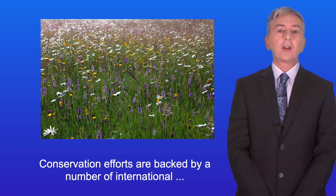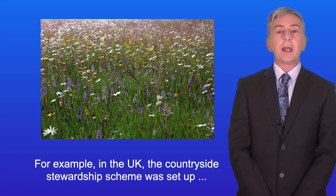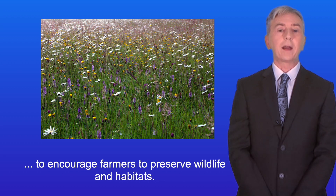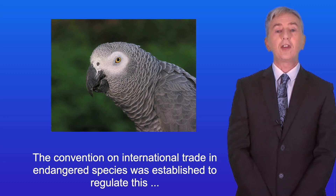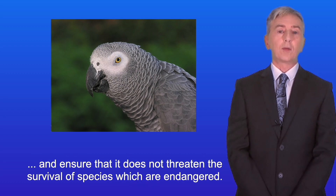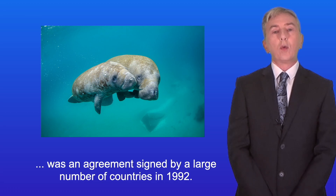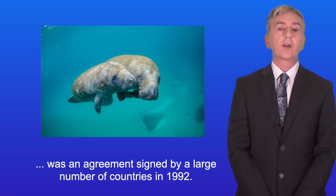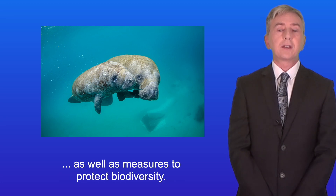Conservation efforts are backed by a number of international and local agreements. In the UK, the countryside stewardship scheme was set up to encourage farmers to preserve wildlife and habitats. The Convention on International Trade in Endangered Species was established to regulate the trading of plants and animals between countries and ensure it does not threaten endangered species. Finally, the Rio Convention on Biological Diversity was an agreement signed by a large number of countries in 1992, which promotes sustainable development as well as measures to protect biodiversity.